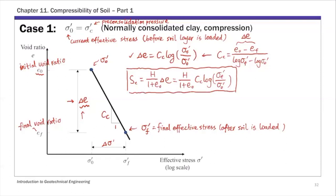For primary consolidation SC, substituting the delta E expression, we get: SC equals H over (1 plus E naught) times CC times log(sigma_F prime over sigma naught prime). This is the equation for primary consolidation settlement for normally consolidated clay. One important point: capital H here is the thickness of the entire consolidating layer — the full clay layer thickness — which may differ from the depth at which you took the soil sample.